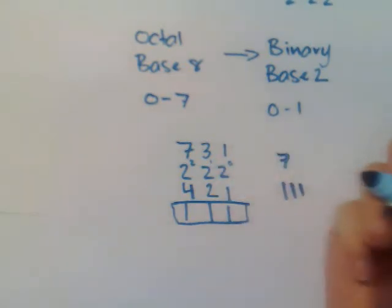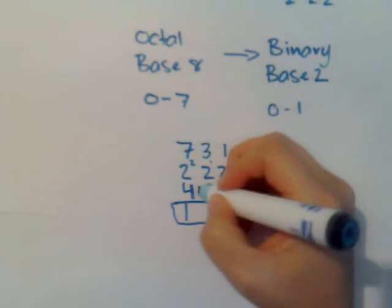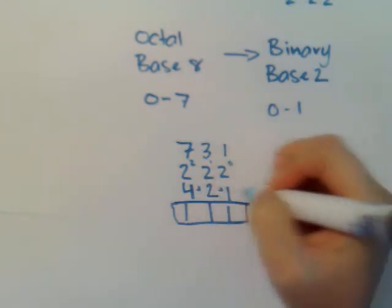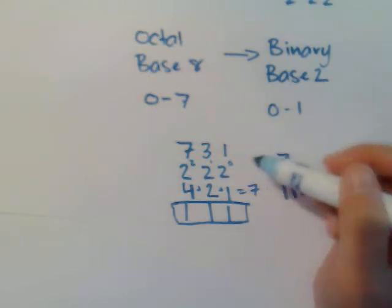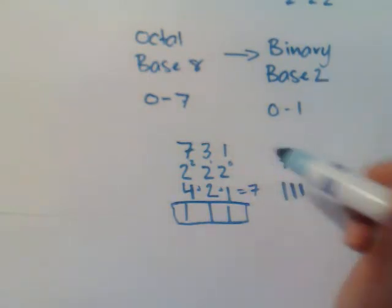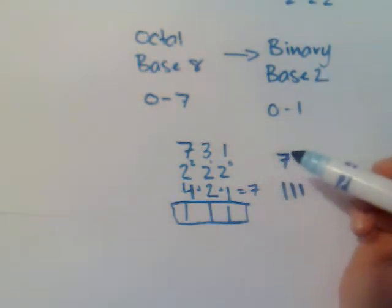And you know that you need 3 because if you look at it this way, 4 plus 2 plus 1 that equals 7, and that's the highest number in the octal number system.